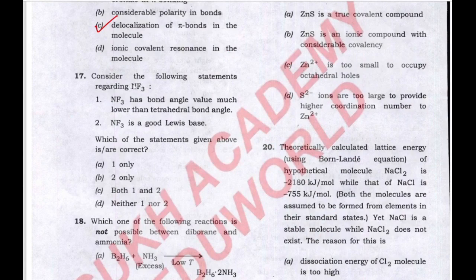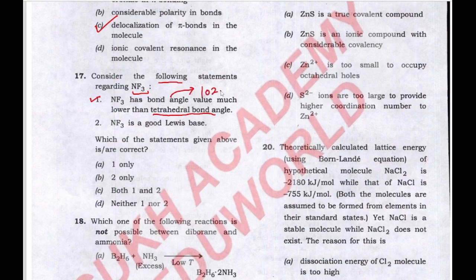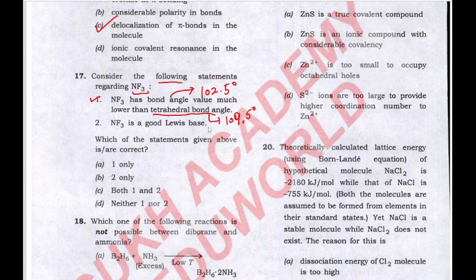The next question considers the following statements regarding the NF3 molecule. Statement one: NF3 has a bond angle much lower than the tetrahedral bond angle. This is correct because NF3 has a bond angle of 102.5 degrees, while the tetrahedral bond angle is 109.5 degrees. Statement two: NF3 is a good Lewis base. This is also correct because nitrogen contains a lone pair of electrons, so it acts as a Lewis base.